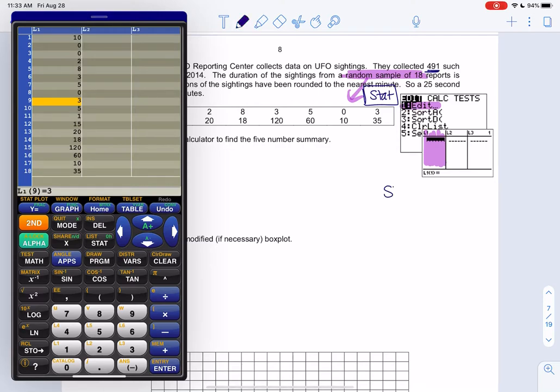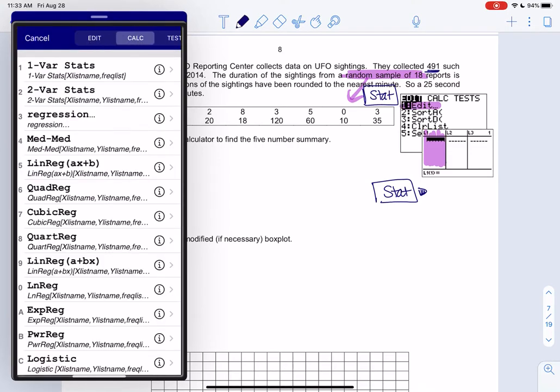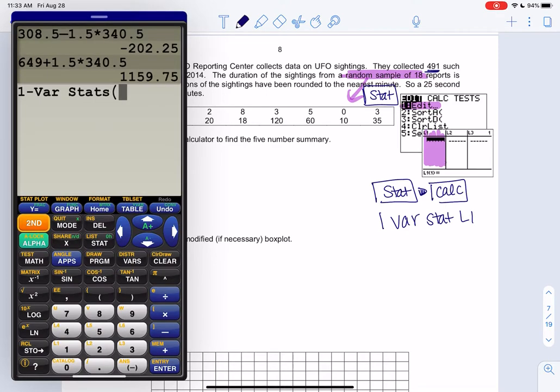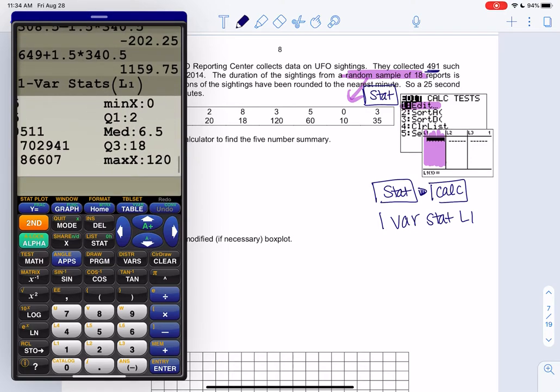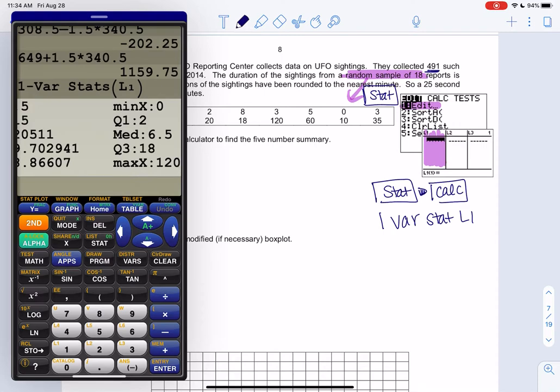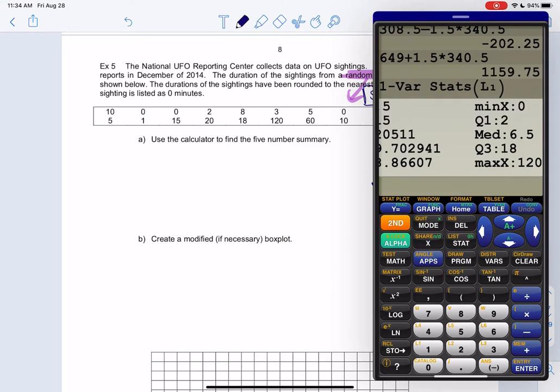Once you're ready we're going to hit stat again. There is a video just on the calculator if you need more detail. Go over to calculate. Calc for calculate. It was one var stat. And then L1. You're going to hit second L1. L1 was hidden down here at the one. Not all the calculators do parentheses so only type parentheses if yours has parentheses. And you get a bunch of information. If you hit the down arrow you'll see the min, q1, median, q3, and max. The calculator did all the work for us.